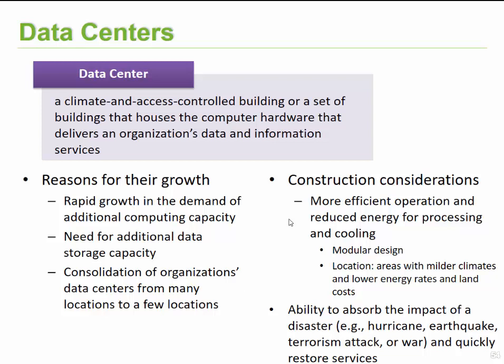Companies design these buildings in a modular fashion, allowing them to add other devices such as server racks, server farms, and mainframes. Many companies also try to place data centers in areas with mild climates, lower energy rates, and lower land costs, because maintaining and running them can become quite expensive. Companies also tend to place their data centers in locations less prone to disasters such as hurricanes, earthquakes, terrorism attacks, and wars — typically in countries where it can be done cheaply with fewer disaster risks.